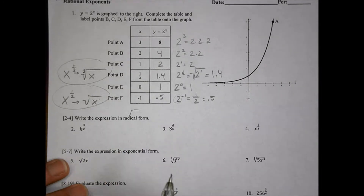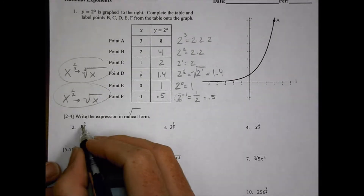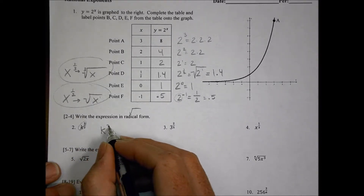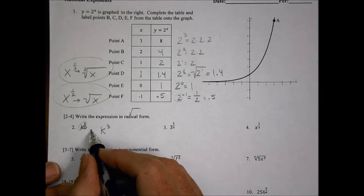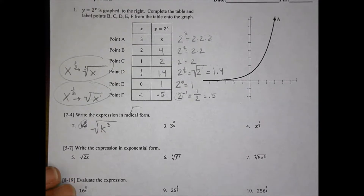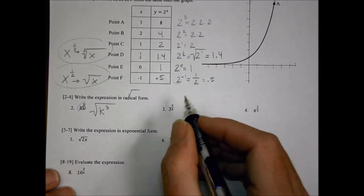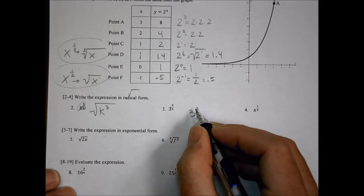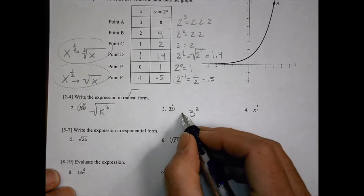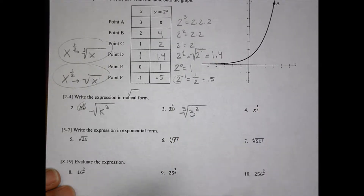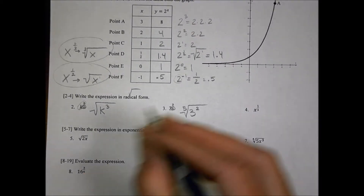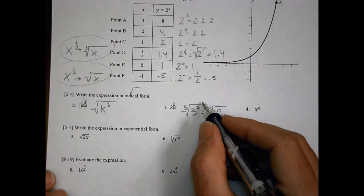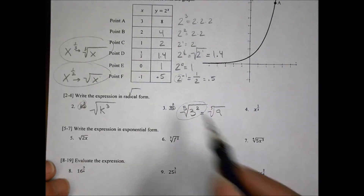For problem 1, this is going to be k to the 3rd, and this number here tells me what my radical is going to be. Because it's a 2 in the denominator, I just do a square root of k cubed — and we're done. For problem 2, I have 3 squared, and the denominator value tells me what my root's going to be. In this case, it's a 5th root of 3 squared, or the 5th root of 9. But they really just want you to leave it in radical form so you can see how it gets separated.